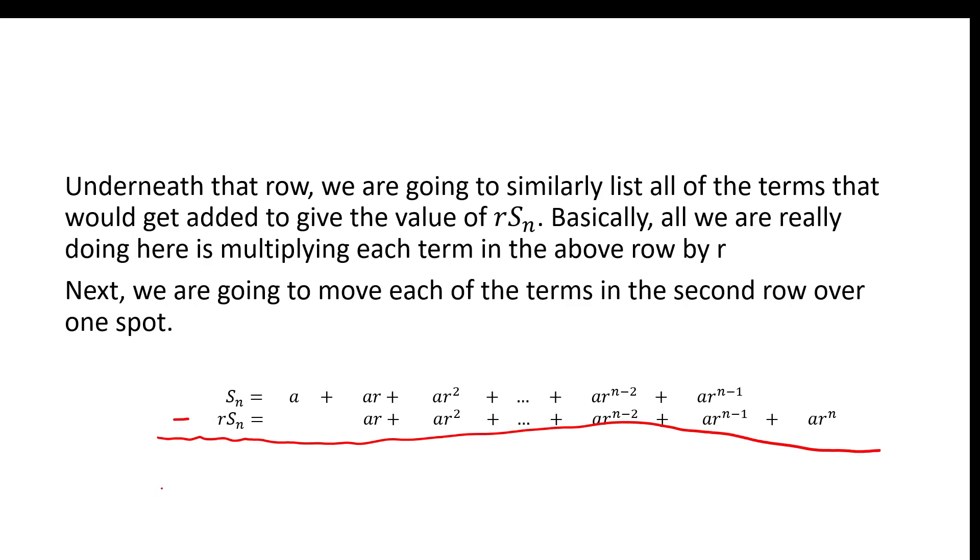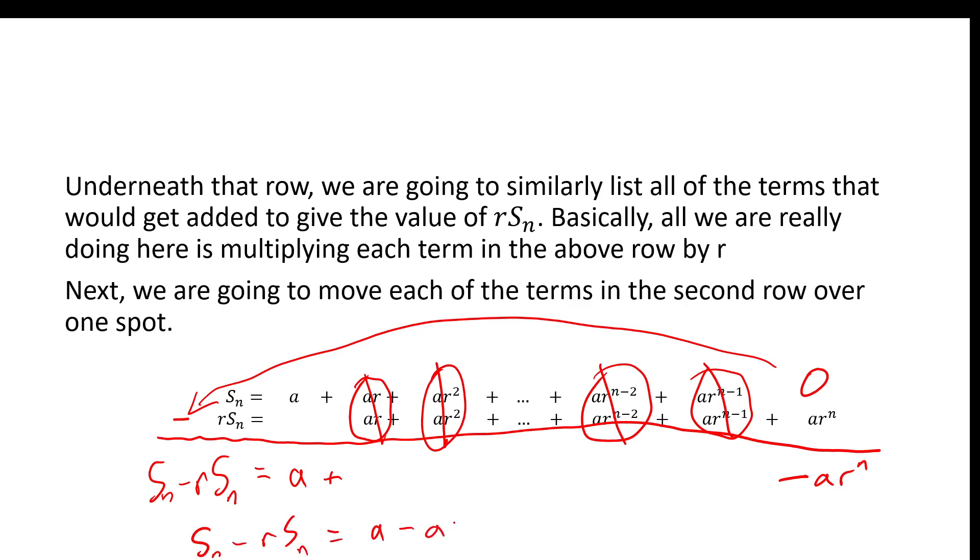So we're going to be able to say that S_N minus R times S_N is going to equal A plus, now we're going to have A R minus A R, so they'll cancel out. A R squared minus A R squared, they'll cancel out. And every column will perfectly cancel out until we get to the very last one. We'll have zero minus, remember we're subtracting each of these terms, so we'll have zero minus A R to the N. So we'll be able to say that S_N minus R S_N equals A minus A times R to the N.